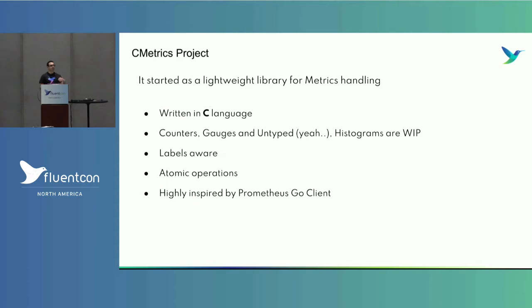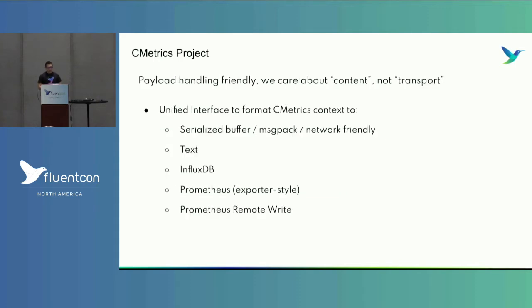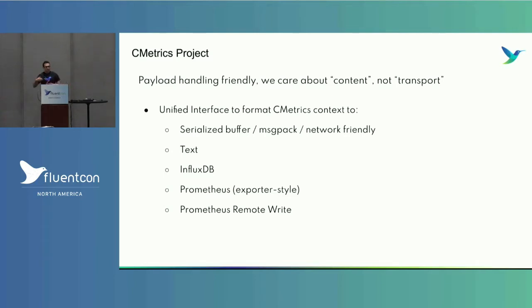We just needed to re-implement it for our own purposes. One of the benefits of the cmetrics project is that it allows us to create contexts of metrics, serialize the data, and send the information over the network. It also converts a context of metrics to Prometheus format, InfluxDB, or Prometheus remote write — so it's agnostic on how we handle the data. There's a difference between handling content and handling transport; if you separate those problems, you come up with a better solution.